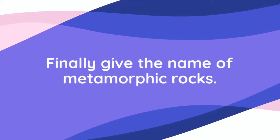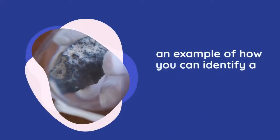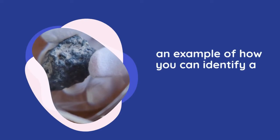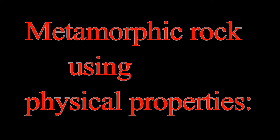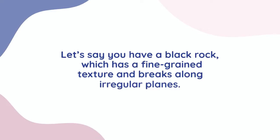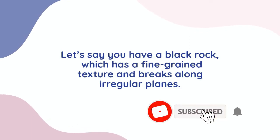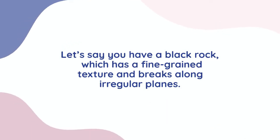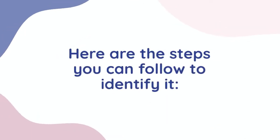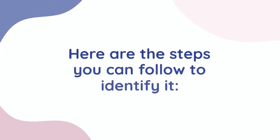Finally, give the name of the metamorphic rock. Here is an example of how you can identify a metamorphic rock using physical properties. Let's say you have a black rock that has a fine-grained texture and breaks along irregular planes. Here are the steps you can follow to identify it.